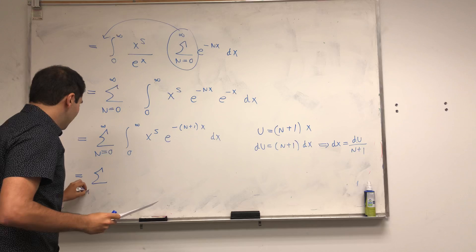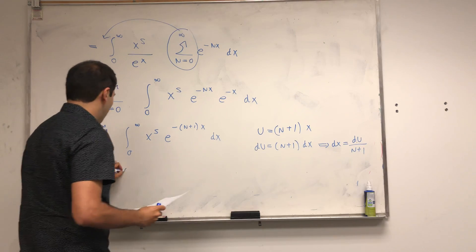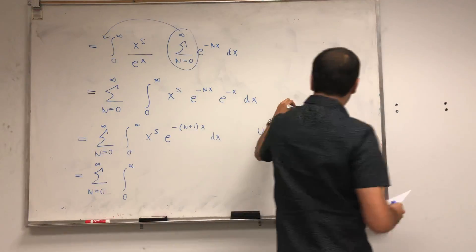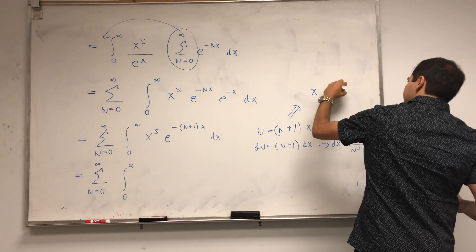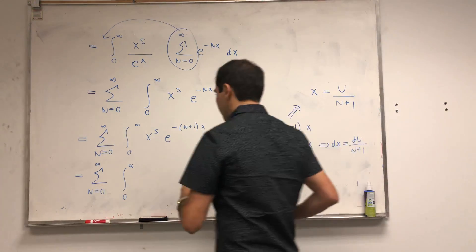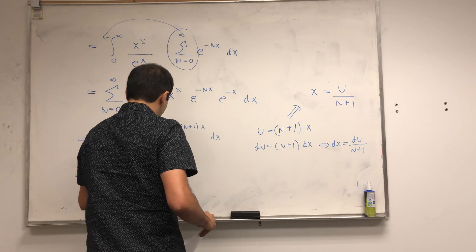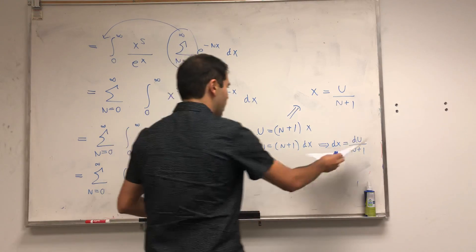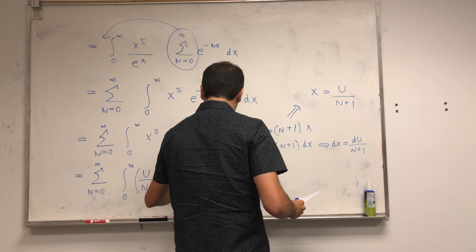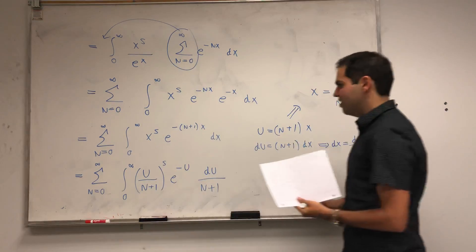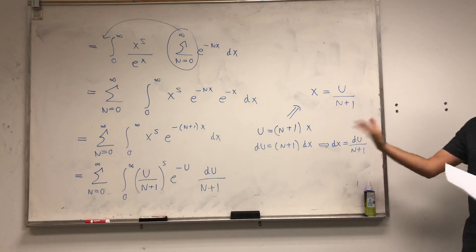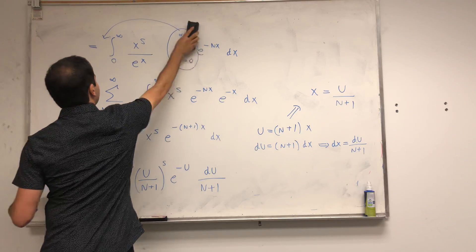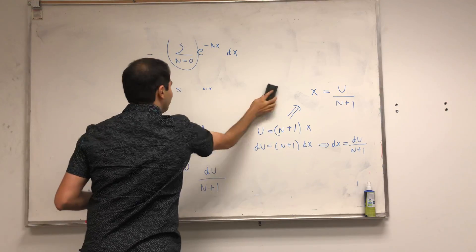So we get sum from n from 0 to infinity of integral from 0 to infinity. x to the s, what is x? x is u over n plus 1. So u over n plus 1 to the s. And then e to the minus u, and then du over n plus 1. Looks like a horrible expression, but we'll clean this up in a second.